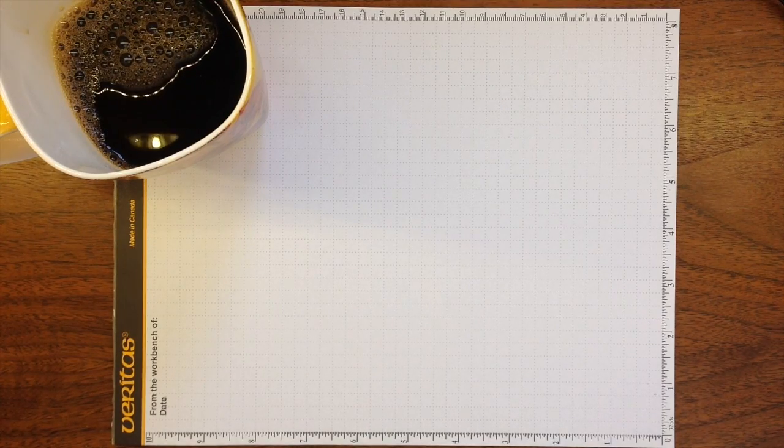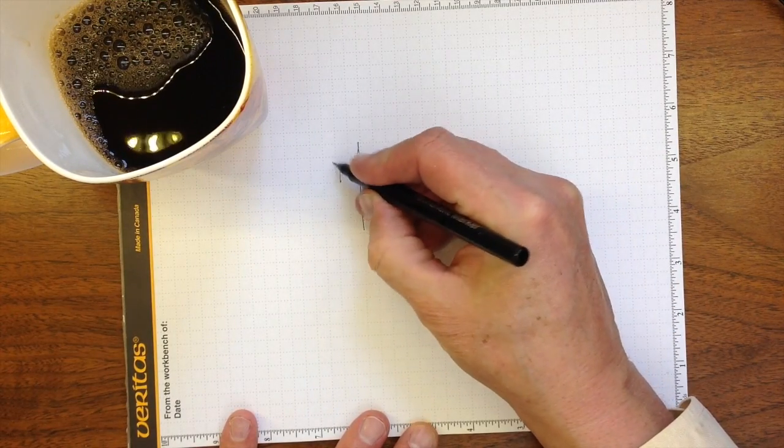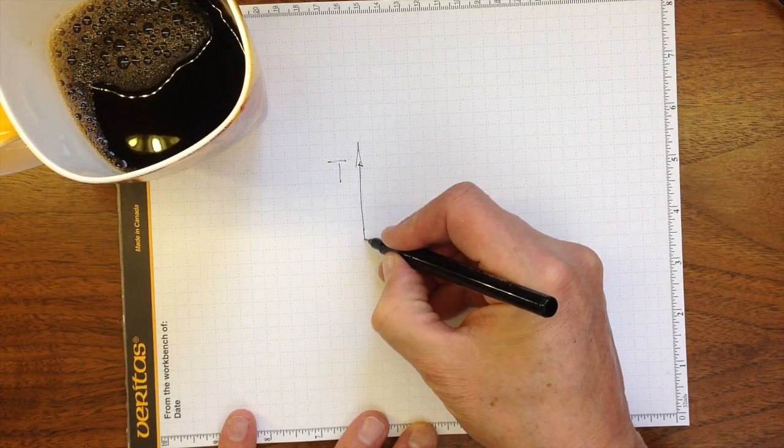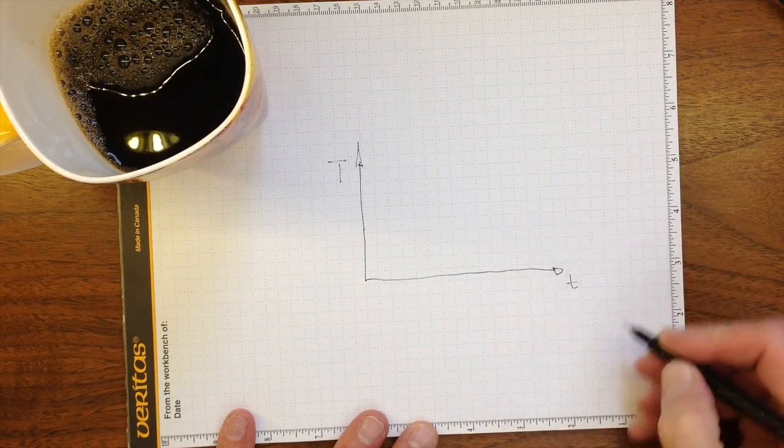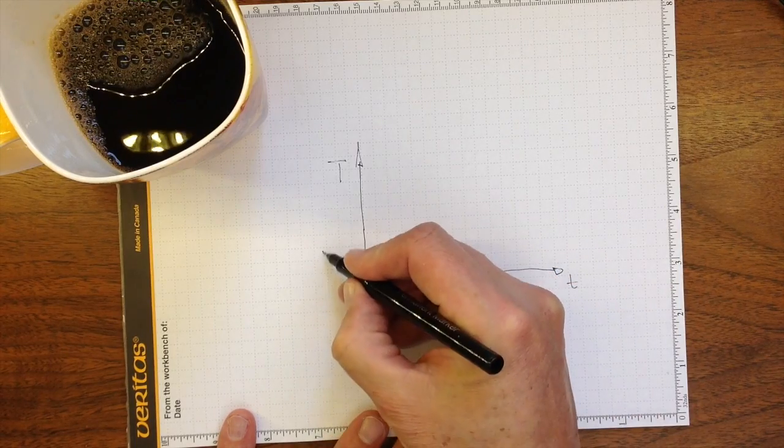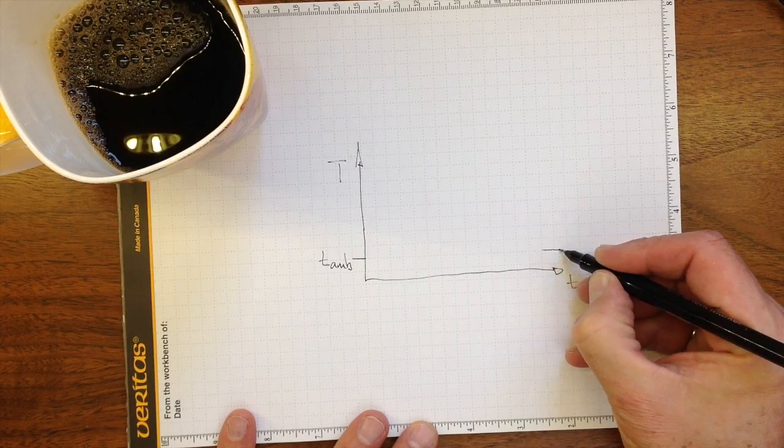I can look at the history of temperature of my coffee versus time, and eventually it will get down to tea ambient after some very long time.